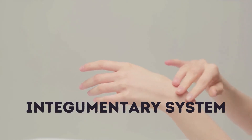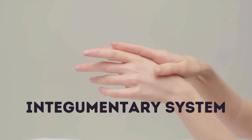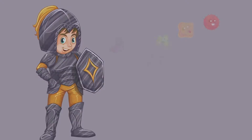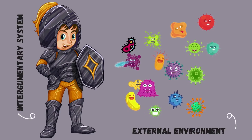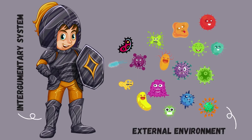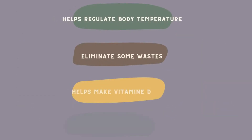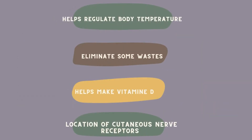First I will start with a little overview of the integumentary system, because I will use one of its functions in my example. This system forms the external body covering. It separates our inner organs from the external environment and prevents their injury — for example, it protects us from microbes and bacteria. This system also has many other functions like helping in the regulation of body temperature, eliminating some waste, helping in the production of vitamin D, and it is the location of cutaneous nerve receptors. But in this example we will only focus on its function of protecting the body from the external environment.